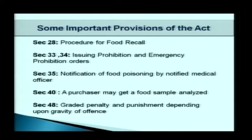Sections 48 to 65 deal with penalty and punishment. There is a graded penalty and punishment depending upon the gravity of offences. Earlier under the PFA Act there was only punishment by imprisonment of minimum 6 months or above. But under this Act there is a graded financial penalty for food found non-conforming due to misbranding or being substandard, and punishment by imprisonment if food is found unsafe and injurious to health.